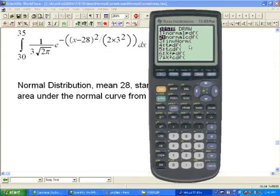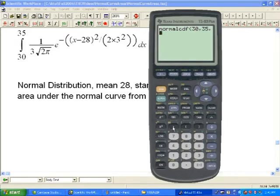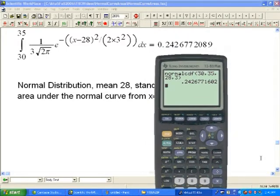We are talking about normal curve areas in terms of cumulative areas, so we are going to the cumulative density function. Notice you are going from 30 to 35, so I want from 30 to 35. It doesn't want us to enter this whole thing because if we told it that 28 is the mean and 3 is the standard deviation.